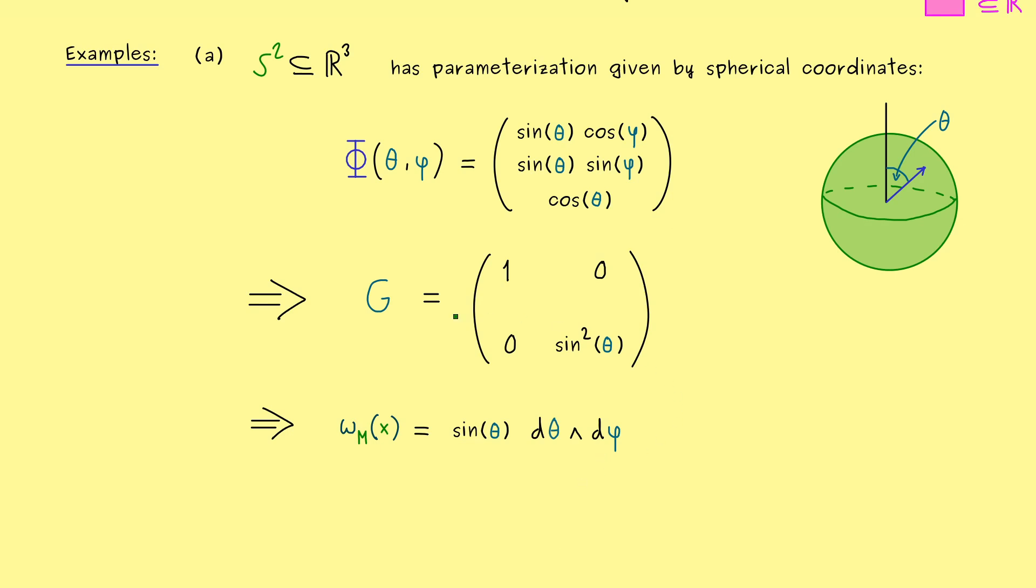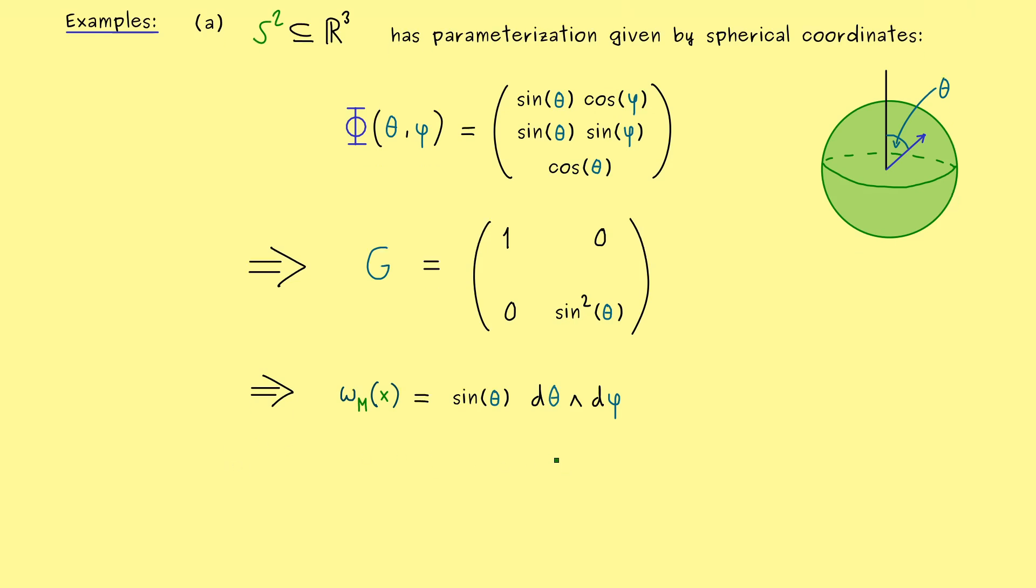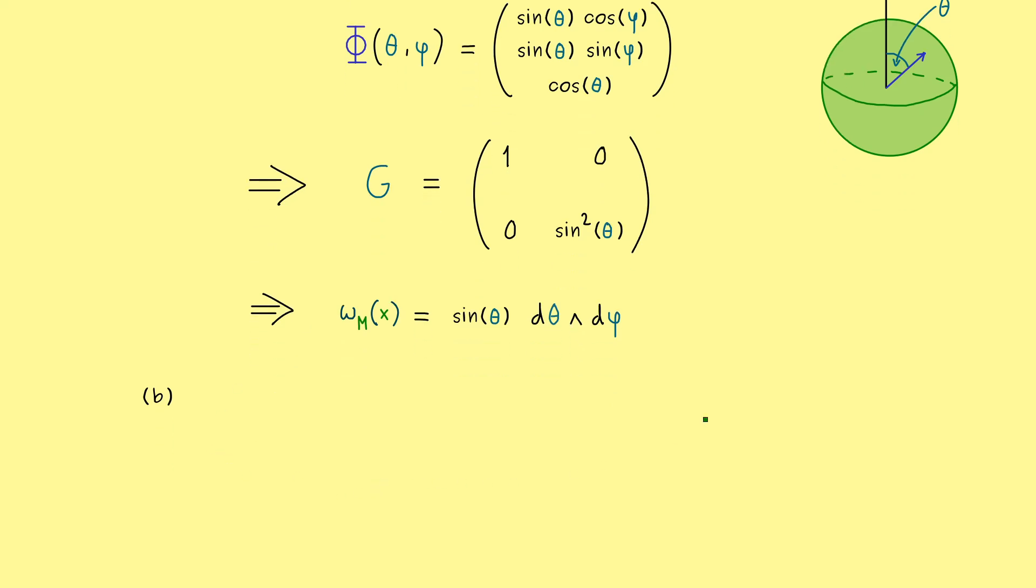There we have it. This is our canonical volume form here. And you might already know that from standard integrations in spherical coordinates. However, now you also know this is just a general outcome by considering Riemannian manifolds. Then let's go to the next example, which we can also fix as a two-dimensional one.